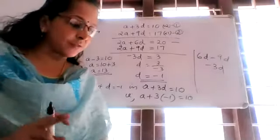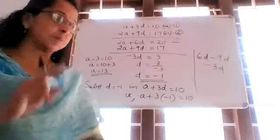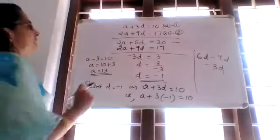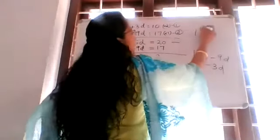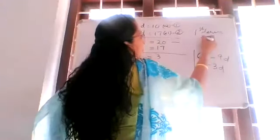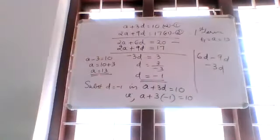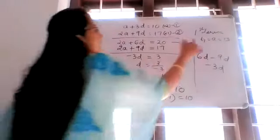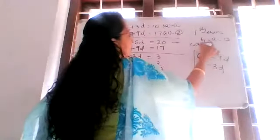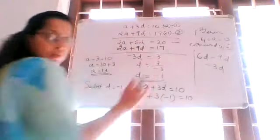We want to find the first term and common difference. Therefore, first term T1 is equal to A is equal to 13. Common difference D is equal to negative 1. That is the answer.